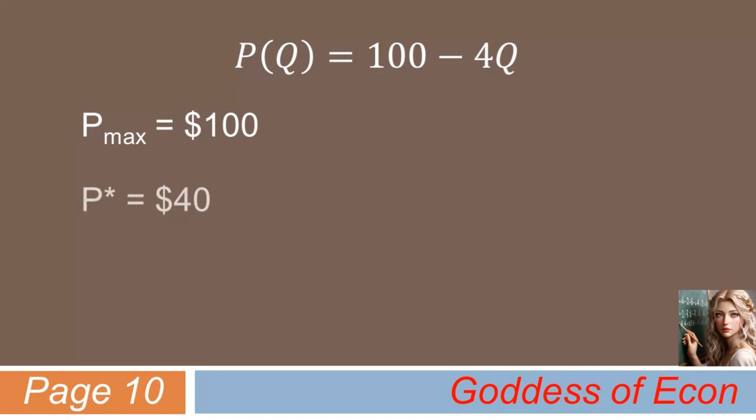Secondly, P star was given by the problem itself. It was $40. Next, we need to find Q star that corresponds to P star. Well, it's not too difficult. We can find the value of Q star by plugging the value of P star into the inverse demand function equation. Here, Q star comes out to be 15.